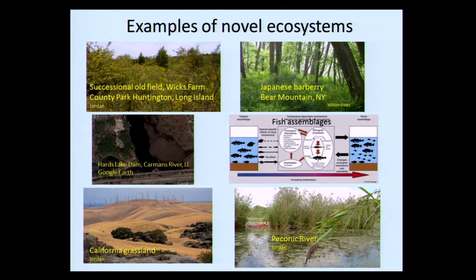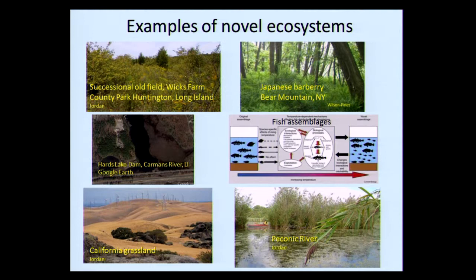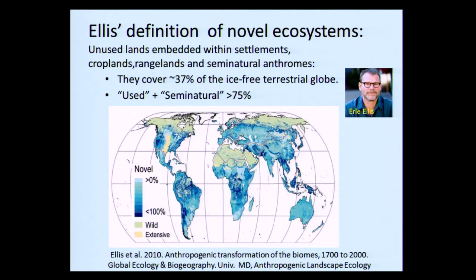A few photo examples: upper left is a successional old field at Suffolk County Parks; upper right is Japanese barberry in Bear Mountain, New York; middle left is a Hards Lake Dam freshwater impoundment — no longer a flowing stream, fish assemblages have changed; lower left is a California grassland where they don't even know what native species were there originally because the weeds got there before the scientists did; and lower right is the Peconic River with Phragmites and Cabamba. Earl Ellis at the University of Maryland has defined novel ecosystems as unused lands embedded within settlements, croplands, rangelands, and semi-natural anthromes, covering about 37% of the ice-free terrestrial globe.